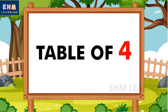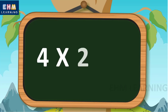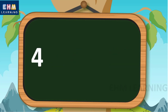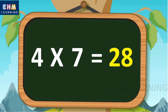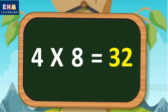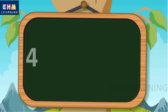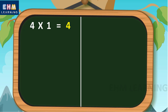Hello children, today we will learn table of four. Four ones are four, four twos are eight, four threes are twelve, four fours are sixteen, four fives are twenty, four sixes are twenty-four, four sevens are twenty-eight, four eights are thirty-two, four nines are thirty-six, four tens are forty.